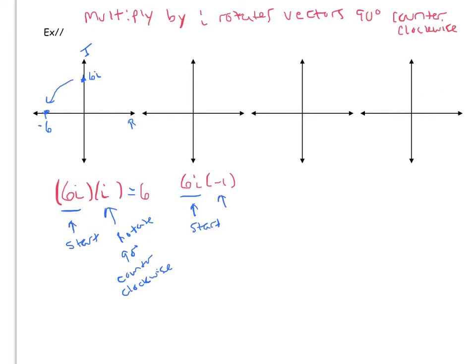that negative 1, multiplying by negative 1, has the effect of rotating 180 degrees. Notice it doesn't matter that you say 180 degrees clockwise or counterclockwise, because it just brings you to the same place.